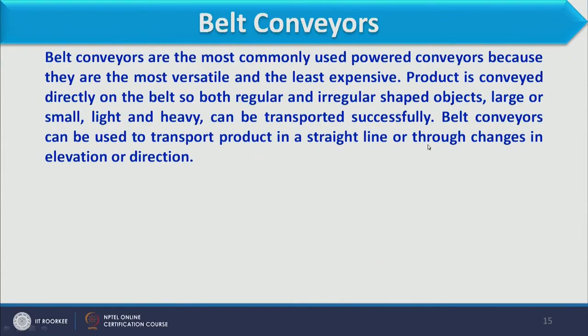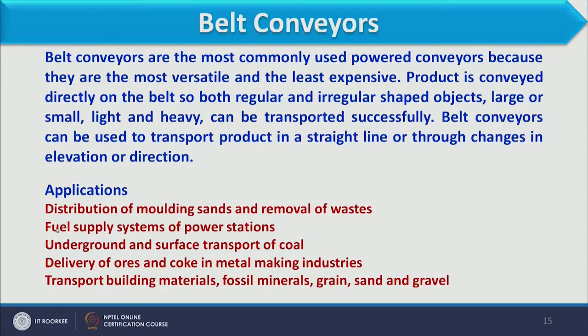Belt conveyors can be used to transport products in a straight line or through changes in elevation or direction. Material can be conveyed horizontally, vertically, or at an inclination using a belt conveyor.